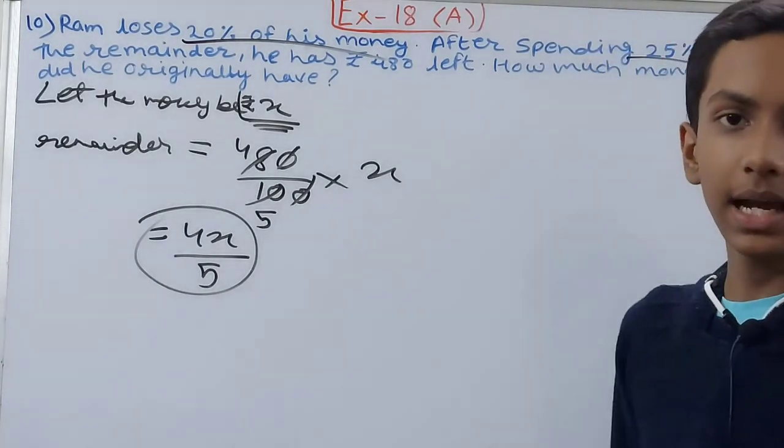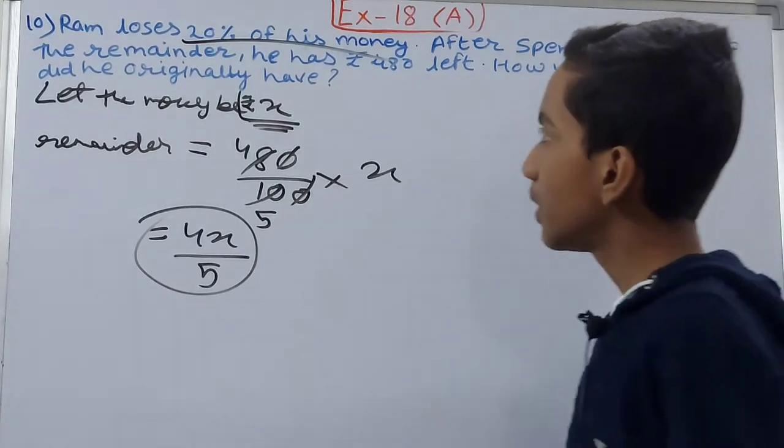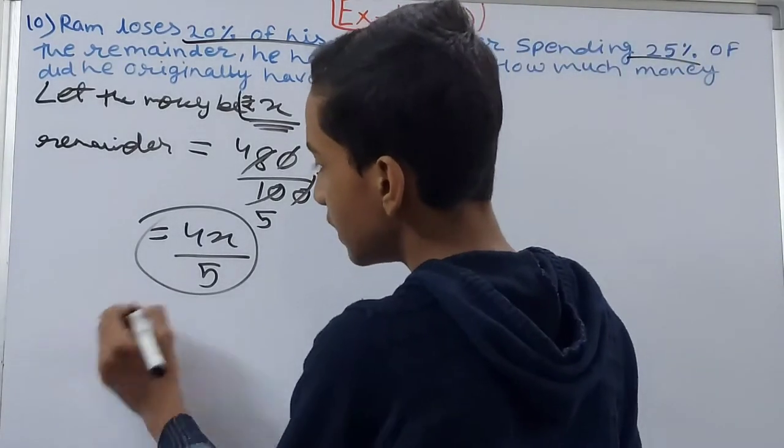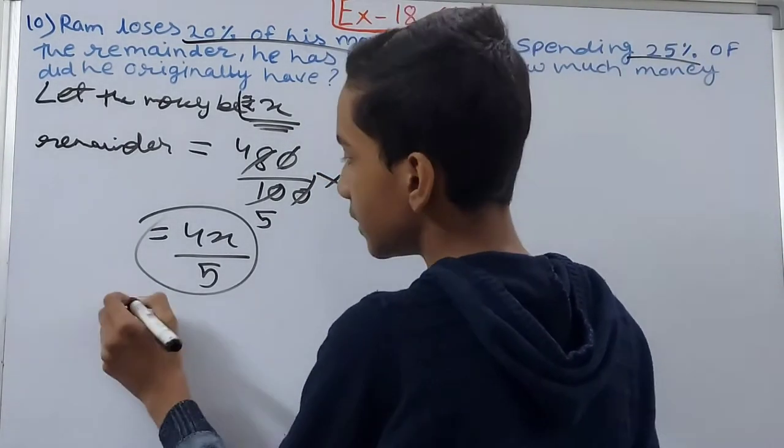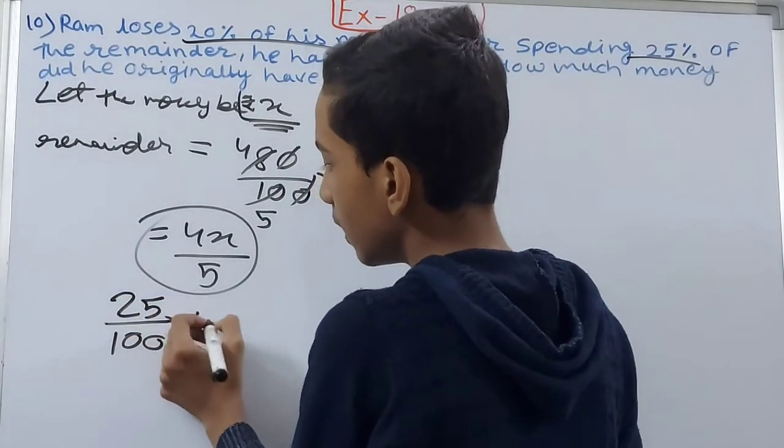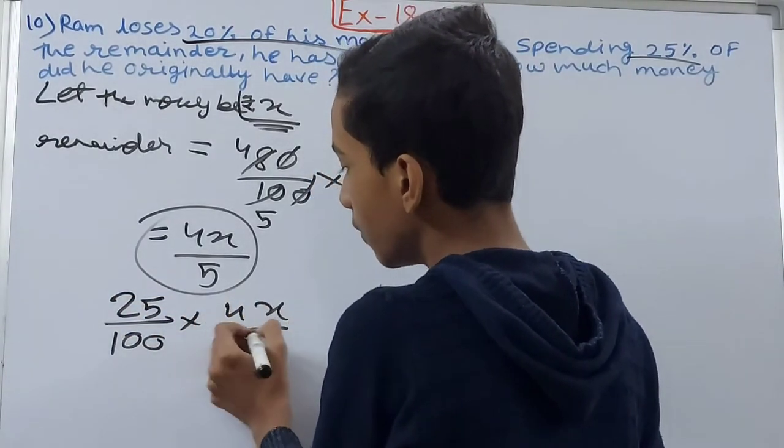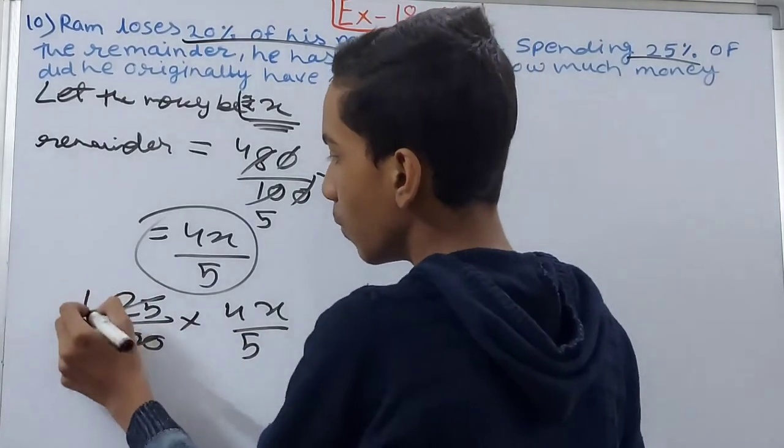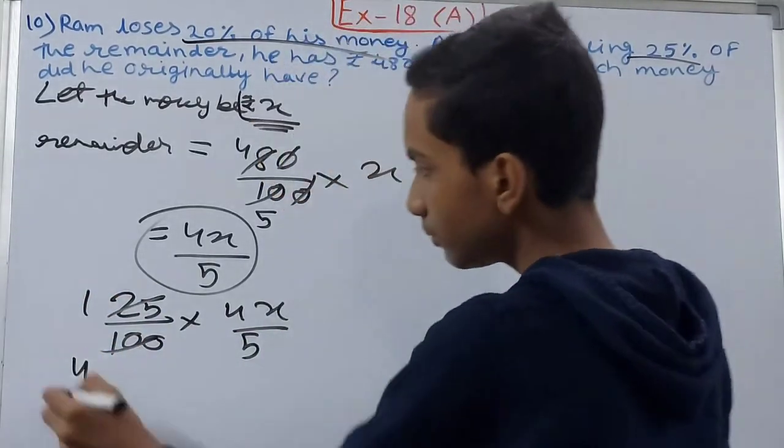He spent 25 percent of 4x upon 5. After that, he had 480 left. So we can solve this. He spent 25 upon 100 into 4x upon 5.